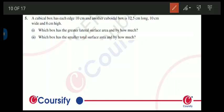Question number five: A cubical box has each edge 10 centimeters and another cuboidal box is 12.5 centimeters long, 10 centimeters wide and 8 centimeters high. Which box has greater lateral surface area and by how much? Which box has smaller total surface area and by how much? So we have two solids given here, a cubical box and a cuboidal box.